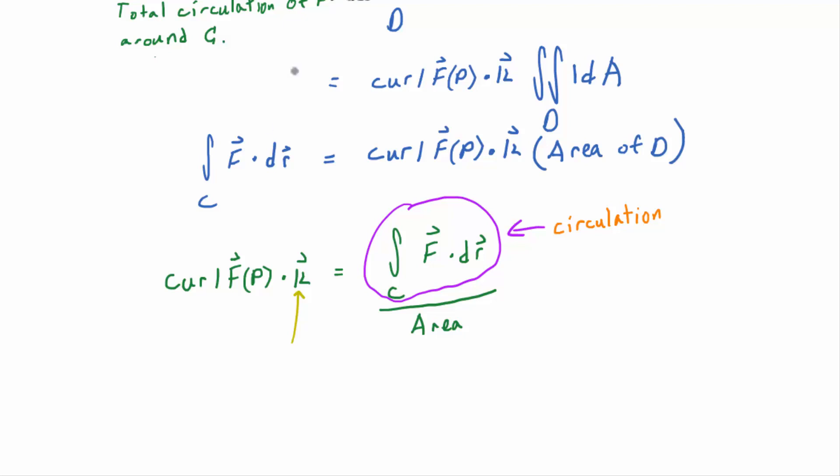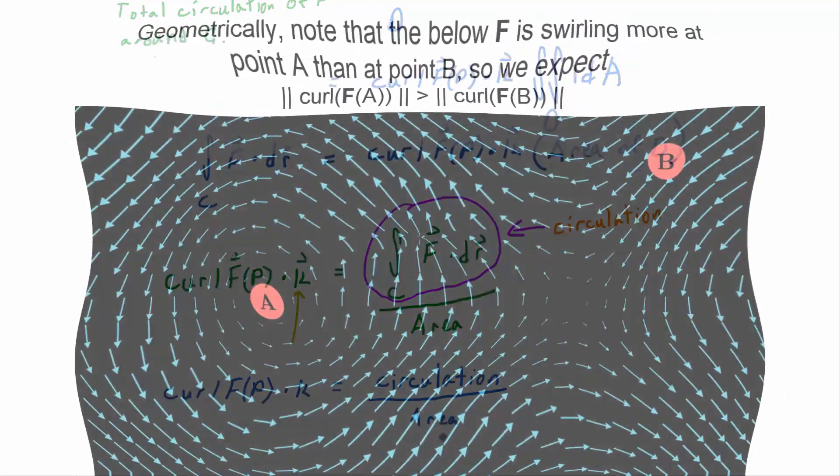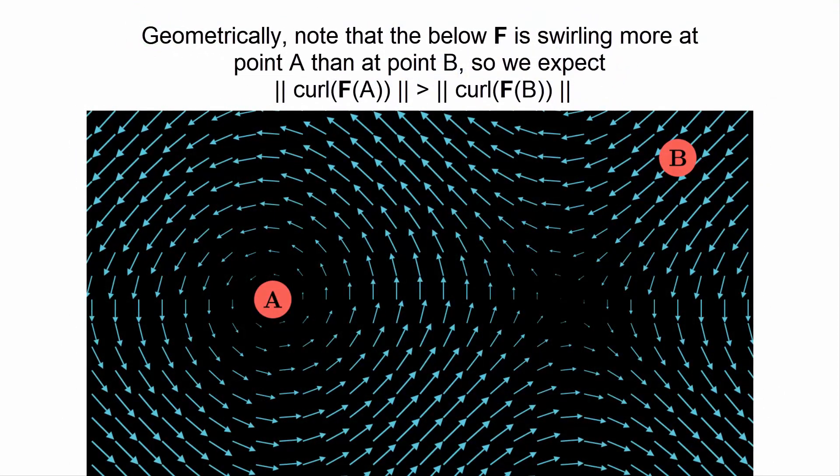So here's our interpretation to close out the class, and we'll talk more about it next week. The curl of F at P dotted with K gives you the circulation around C, but it's per unit area. So then curl is going to kind of measure point-wise at a point P how much the vector field is twisting around that point P. That's kind of a point-wise interpretation of curl.